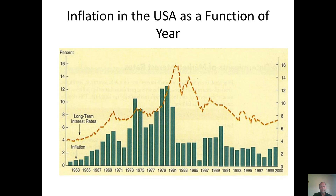The inflation rate kept going up until around 1980, at which point Paul Volcker was appointed to the Federal Reserve by Jimmy Carter. Volcker did exactly what he said he was going to do: he massively increased interest rates, pushing the country into a recession. But as you can see, post-1981 he did get inflation under control.